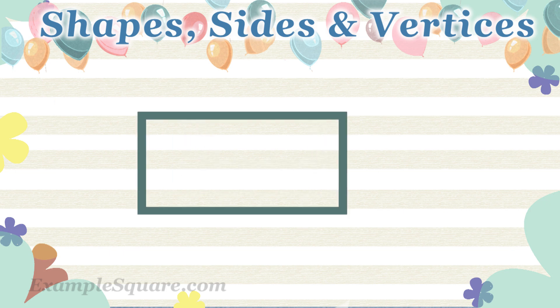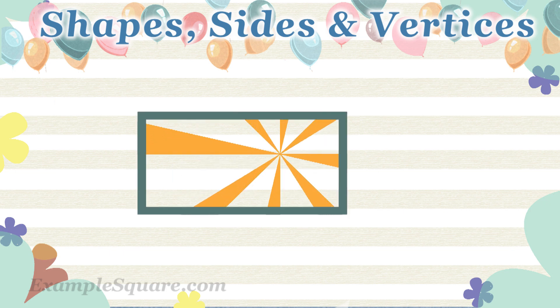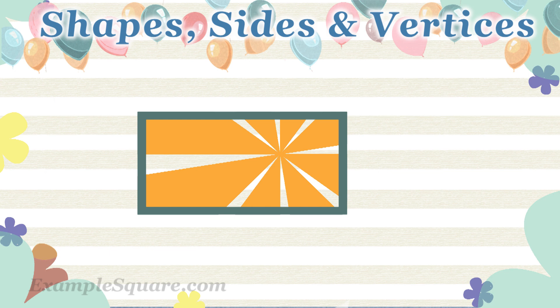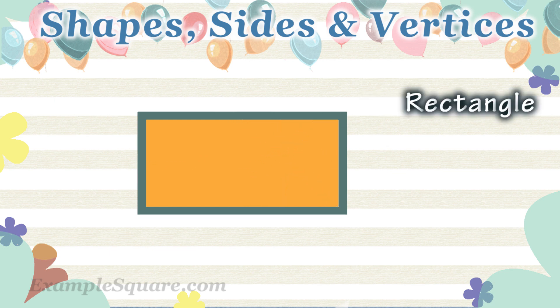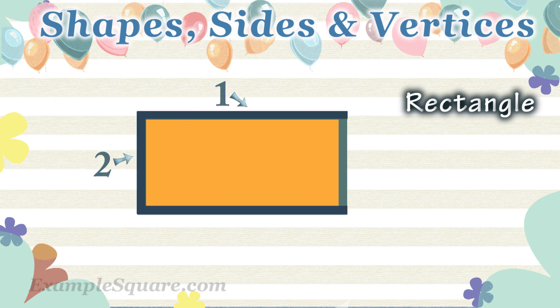What shape is that? Rectangle. How many sides does a rectangle have? A rectangle has four sides.